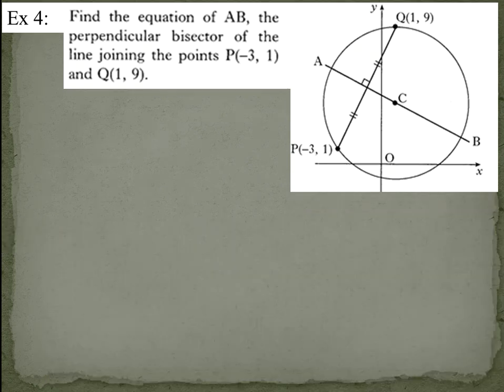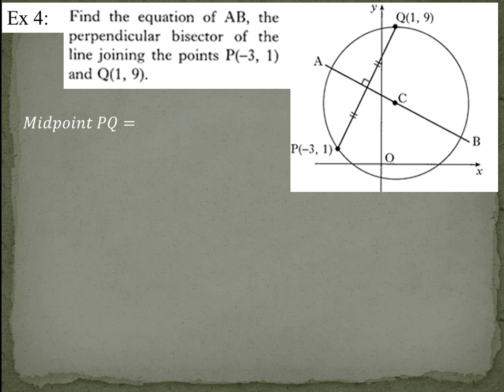Example four and five are taken from past papers, so have a go at them. Example four says find the equation of AB, the perpendicular bisector of the line joining the points P and Q, and they've given you a diagram. As I said, it's likely they will always give you a diagram. So we've been asked to find the equation of AB. It's a perpendicular bisector, so we need to find the midpoint and need to find the gradient of PQ in order to be able to find the gradient of AB. So midpoint, what number lies between minus three and one? On the diagram, it looks negative, and from that, you can work out that between minus three and one, the midpoint is minus one, and between one and nine, the midpoint is five. So it's minus one, five, which clearly fits the diagram.